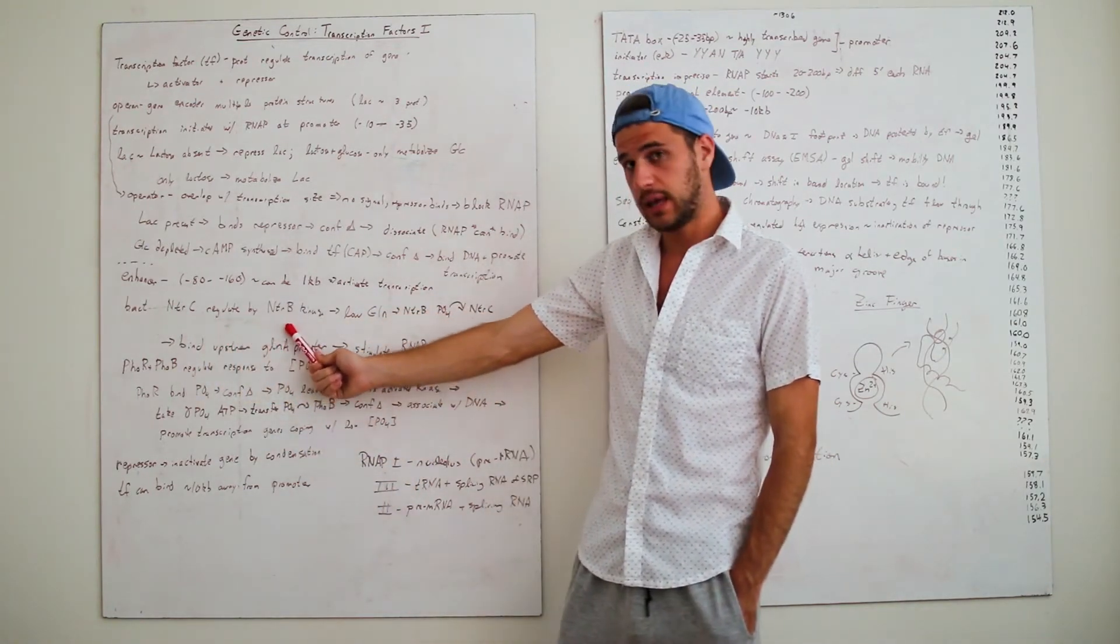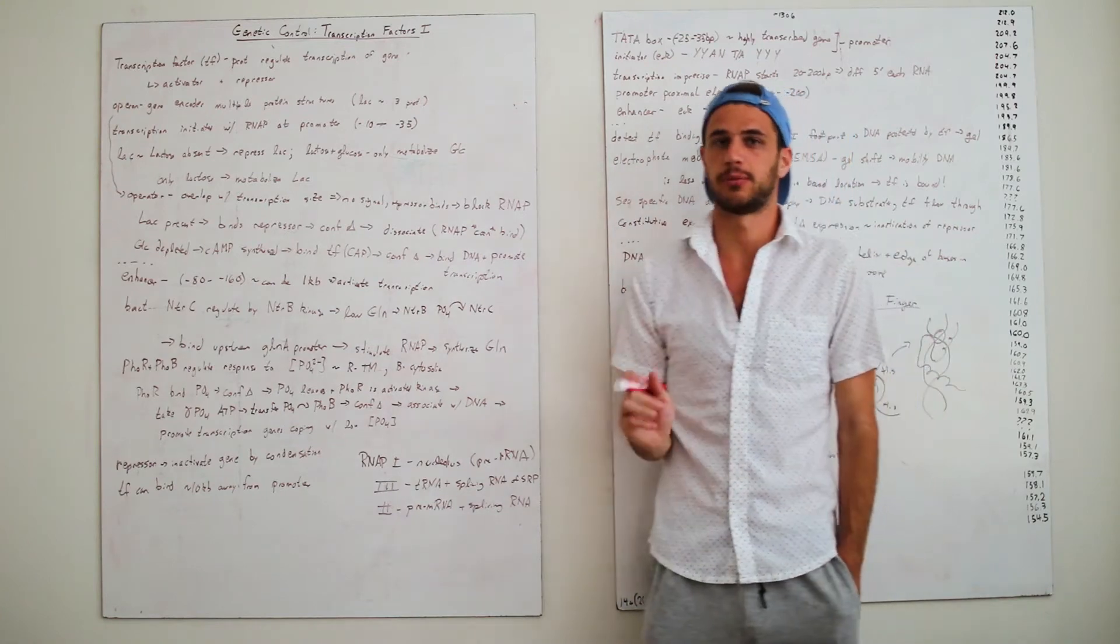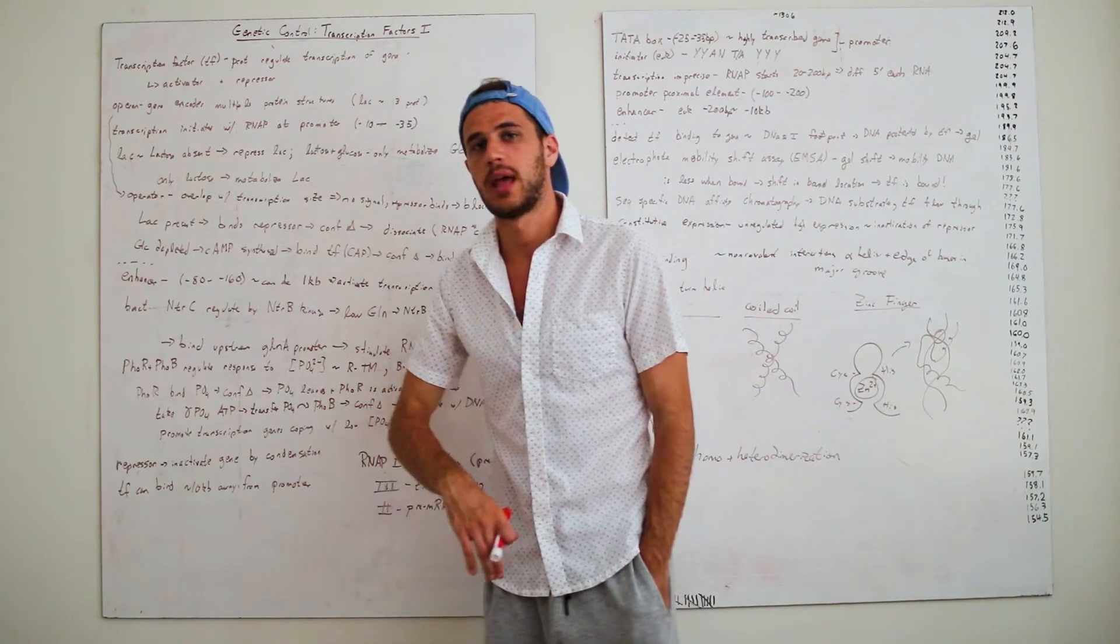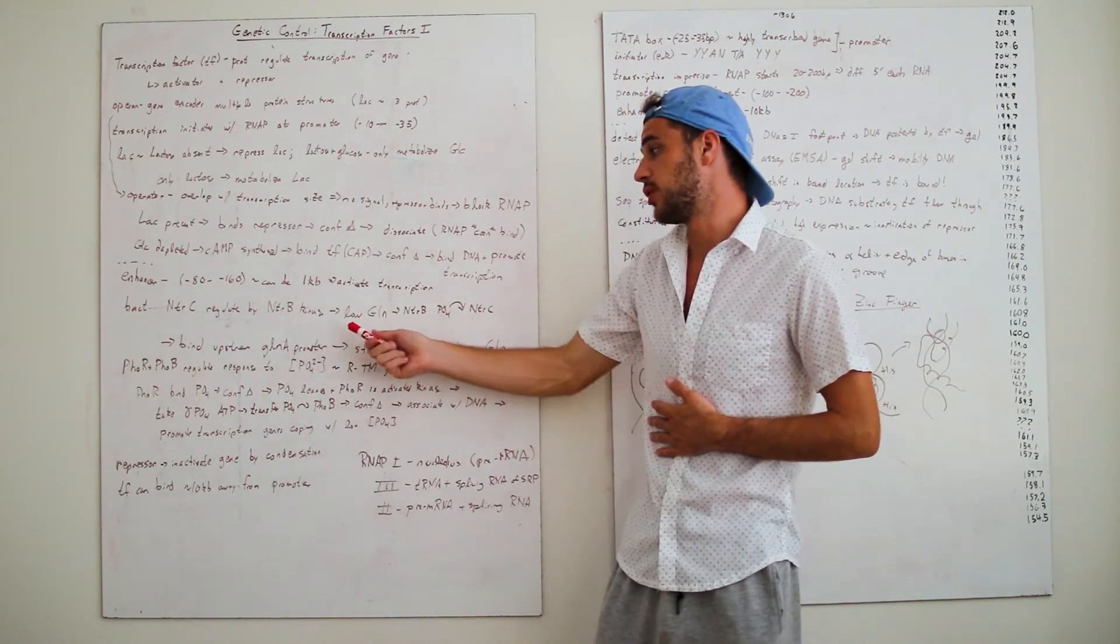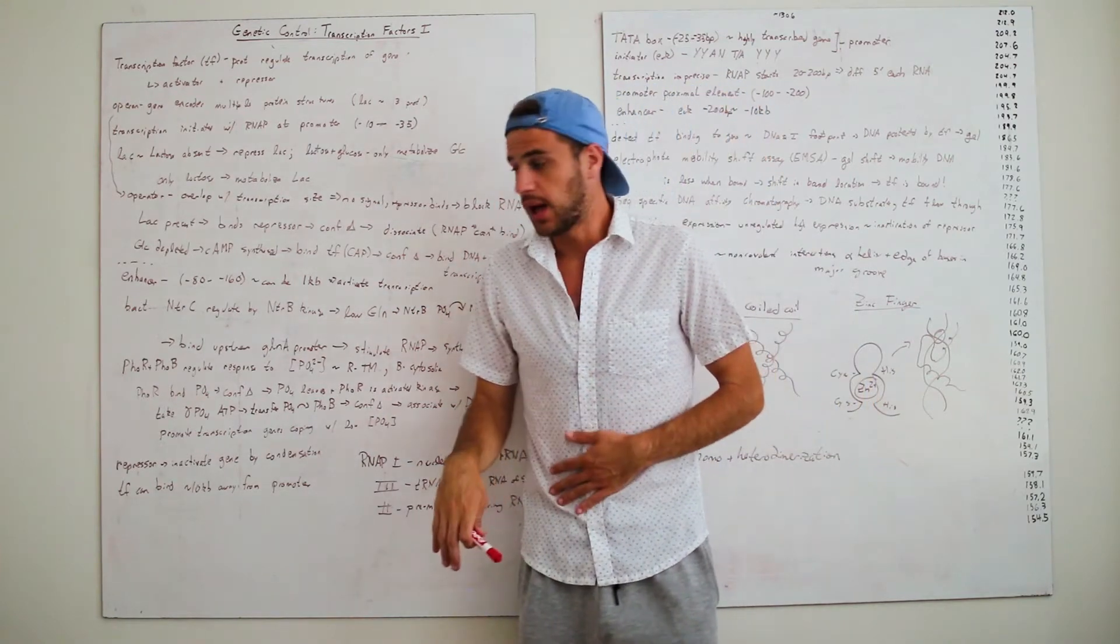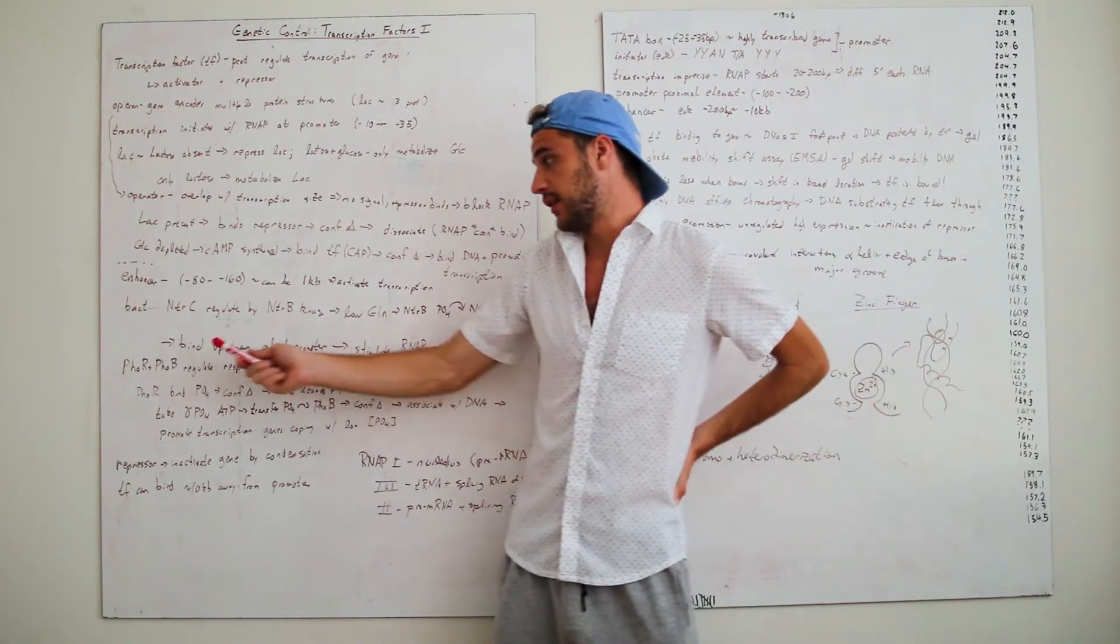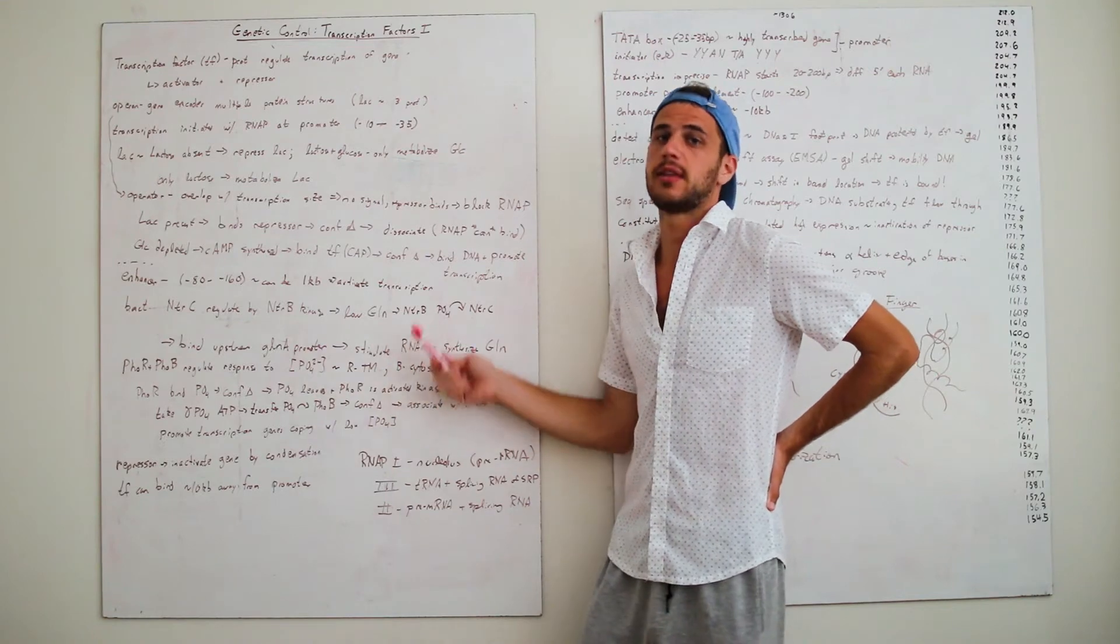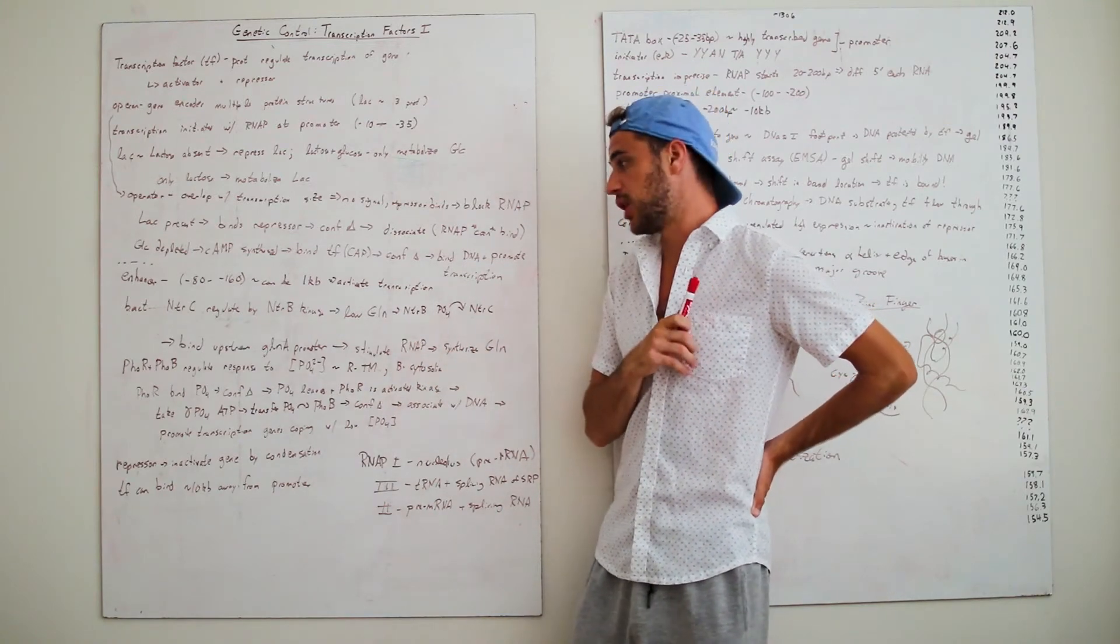NTRC is regulated by NTRB kinase. This B is a kinase, and if you don't remember what kinase is, a kinase is just a protein that phosphorylates another protein. Essentially, it usually grabs the gamma phosphate off of ATP and sticks it onto a different protein. What usually happens is you get a signaling cascade and something happens. In this case, what happens is when there's low glutamine, remember that good old amino acid, when you have low glutamine, the NTRB will phosphorylate NTRC, then the NTRC is now activated, so it will bind upstream to the GLNA operator, the promoter, and then stimulates RAP, and then you have the GLNA being promoted, so that means we have synthesis of glutamine.